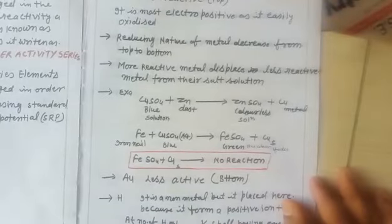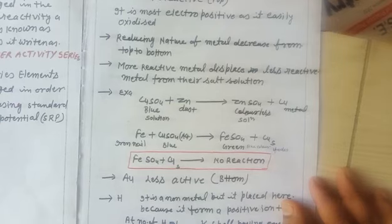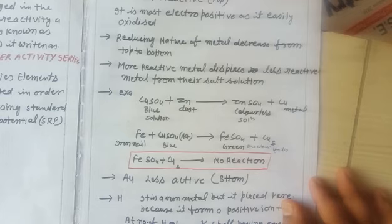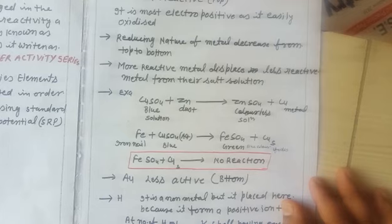Potassium is the most reactive element which is placed at the top of the series. It has a greater tendency to lose electrons from its outermost shell. Due to that reason, it is more electropositive and is easily oxidized.